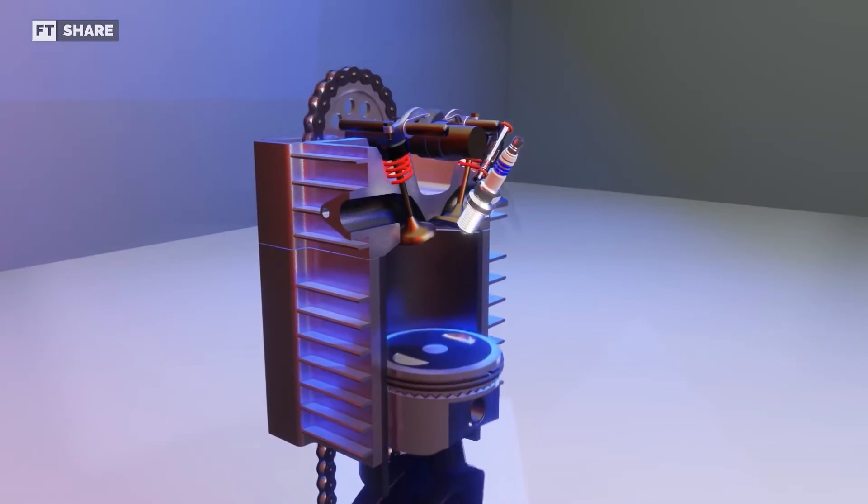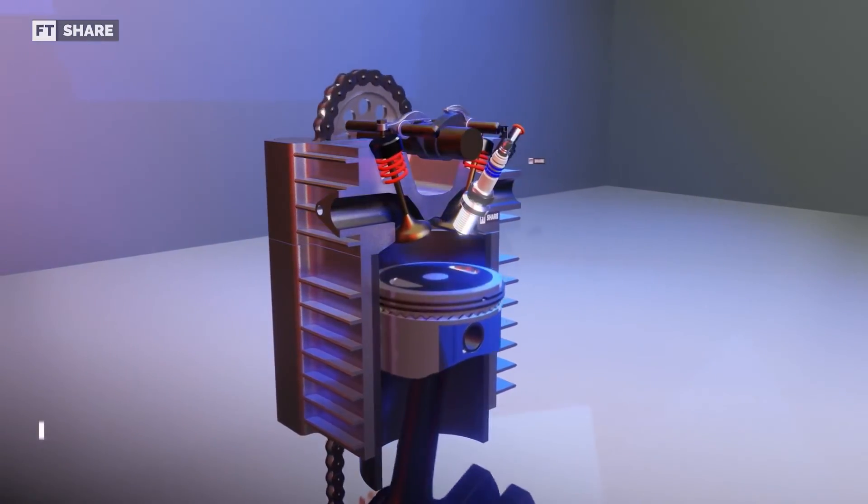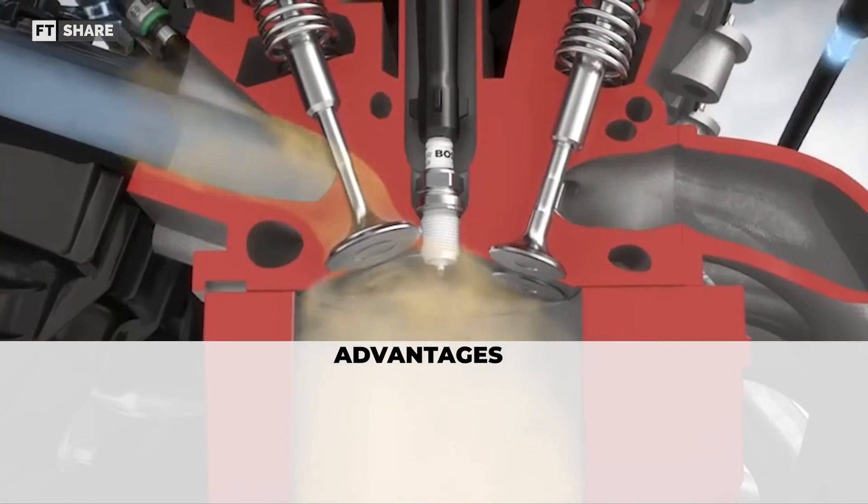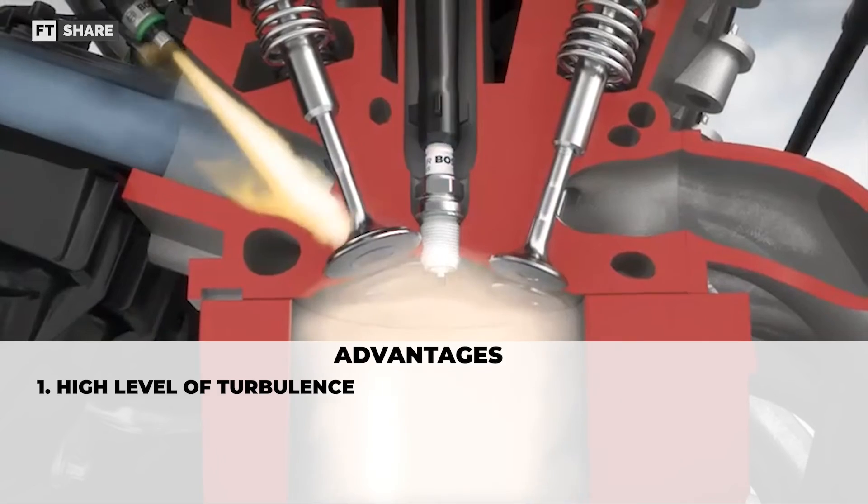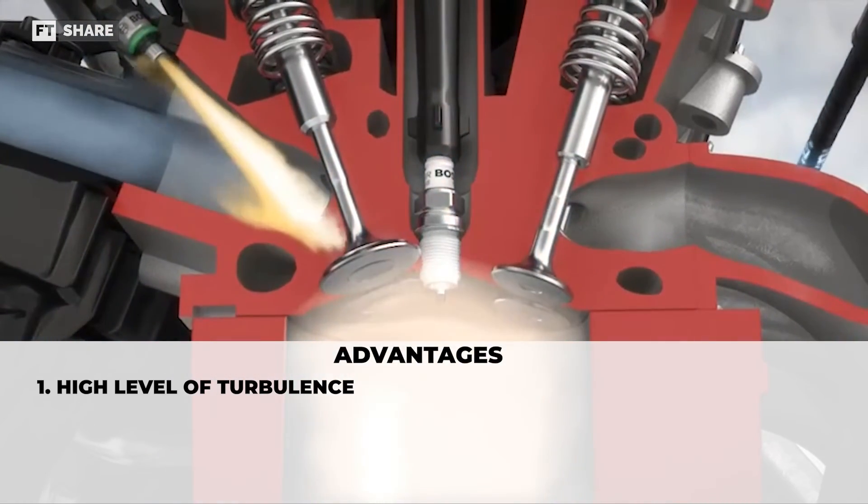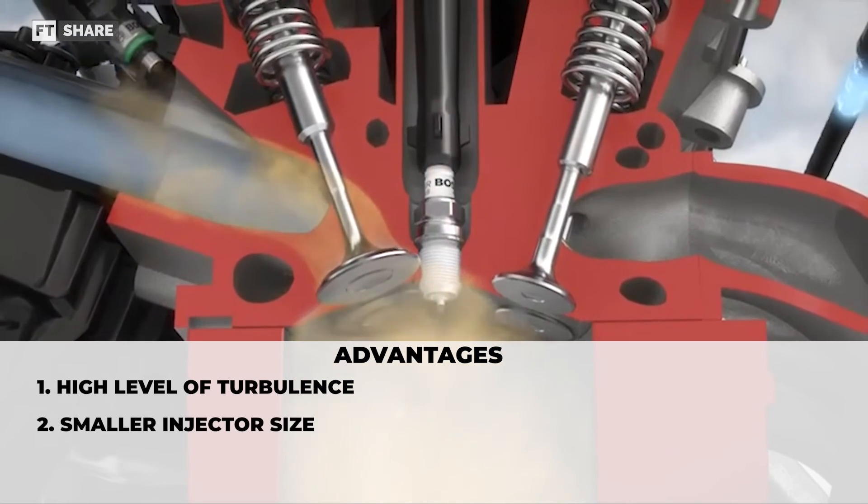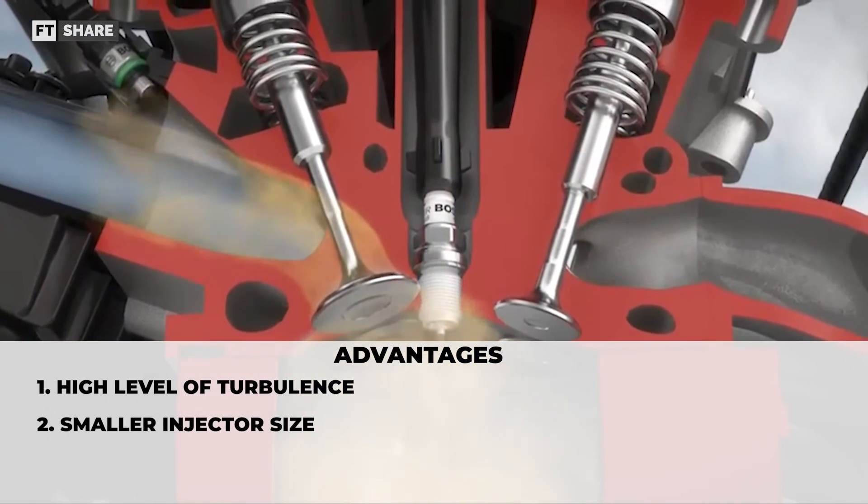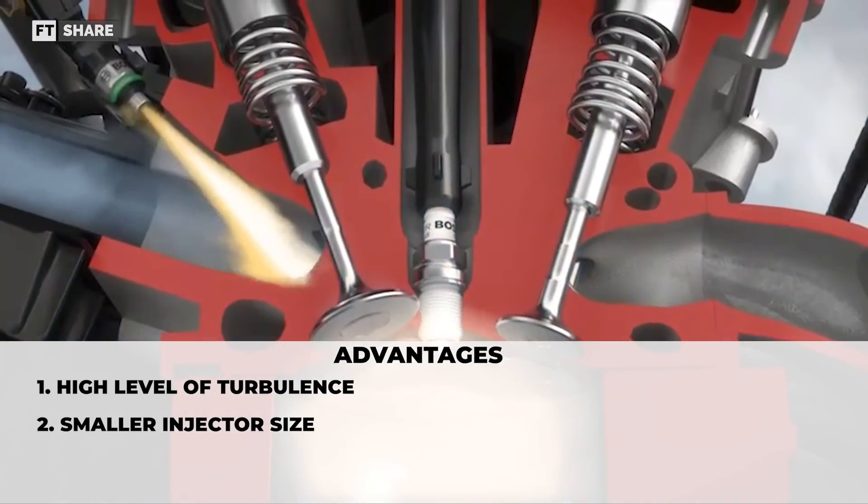Next, we will also discuss the advantages and limitations of indirect injection. For the advantages, first advantages, the high level of turbulence at different engine speeds makes the mixing process more uniform. And then second, does not require a high power injector or a smaller injector size, where the size of the high power injector takes up a lot of space.